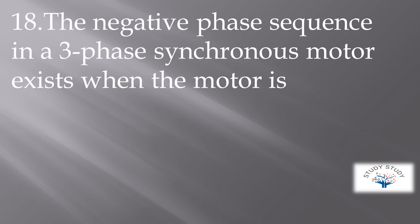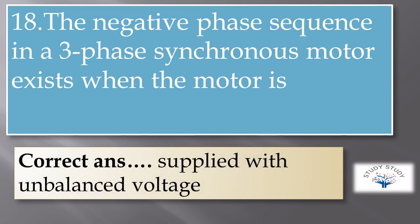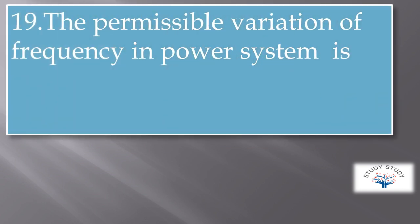The negative phase sequence in a 3-phase synchronous motor exists when the motor is supplied with unbalanced voltage. When unbalanced voltage is supplied, the negative phase sequence of a 3-phase synchronous motor exists. For a balanced system, there will be no negative phase sequence.